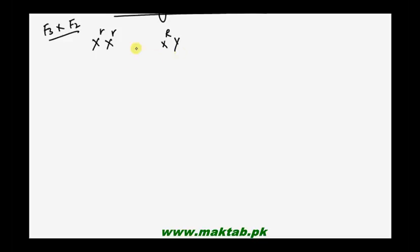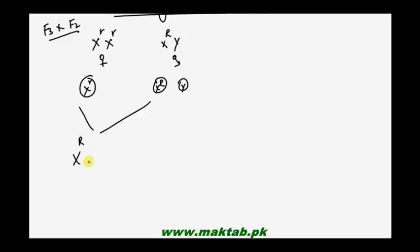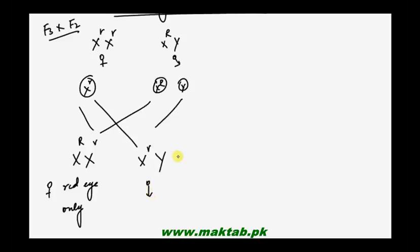In this reciprocal cross, the white-eye female (X small r X small r) is crossed with a red-eye male (X capital R Y). The female produces all X small r gametes, and the male produces X capital R and Y gametes. The resulting females will all be red-eyed only, and the resulting males in the F4 generation will all be white-eyed only.